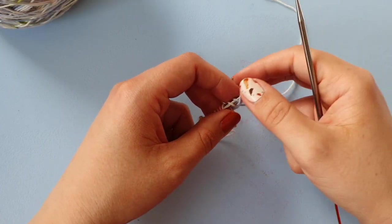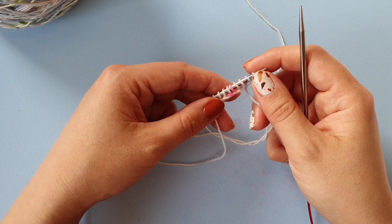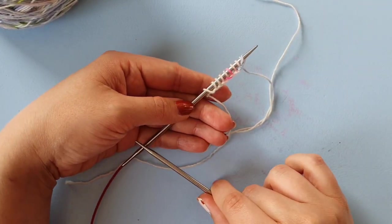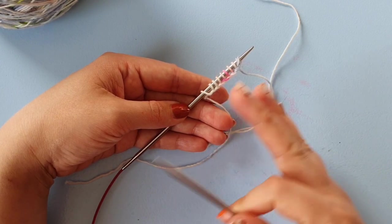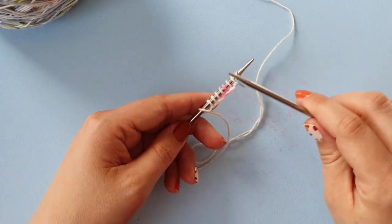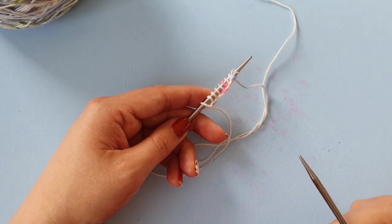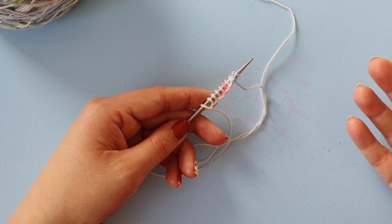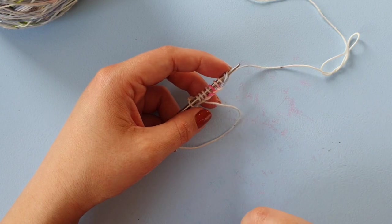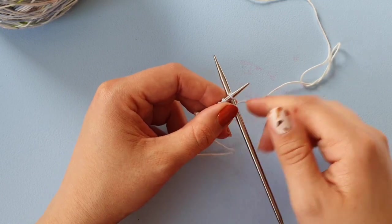And now you can just cast on for as many stitches as you want. And this is also a very helpful cast-on if you're already midway through your knitting project and you need some additional stitches. For example, if you're knitting top-down, you've just done the sleeve separation and you want some more stitches for the underarm, you can add them like this.